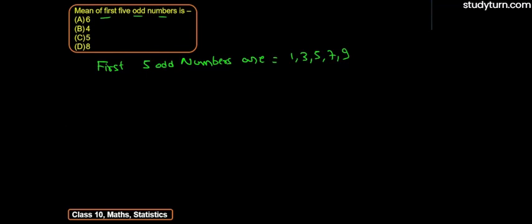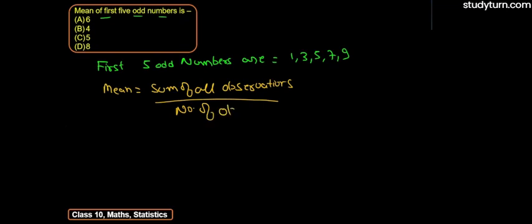What should we calculate? Mean. Mean is equal to sum of all observations divided by number of observations.